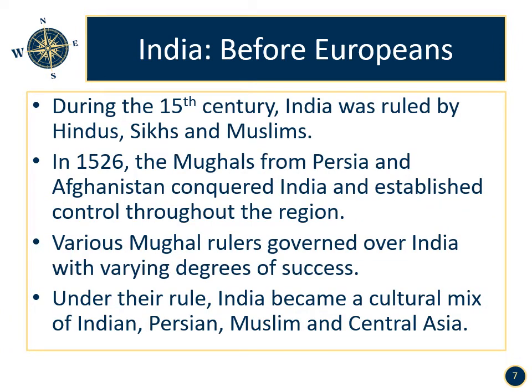India before Europeans. During the 15th century, India was ruled by Hindus, Sikhs, and Muslims. In 1526, the Mughals from Persia and Afghanistan conquered India and established control throughout the region. Various Mughal rulers governed over India with varying degrees of success. Under their rule, India became a cultural mix of Indian, Persian, Muslim, and Central Asian influences. The caste system very much defined India — a system of privilege that existed for over 3,000 years, categorizing people into five different categories. The lowest level were the Dalits, meaning outcast or untouchable.